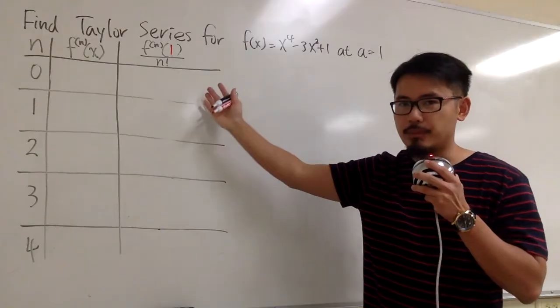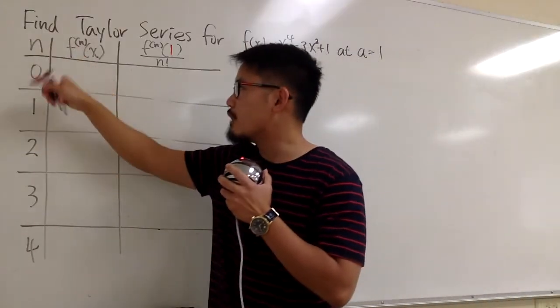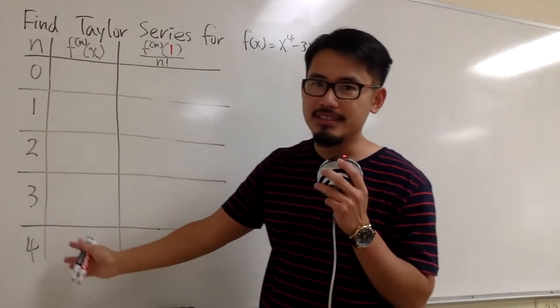As you can see, we set out the table right here already. I put down the n values going from 0 to 4, and hopefully this is enough.